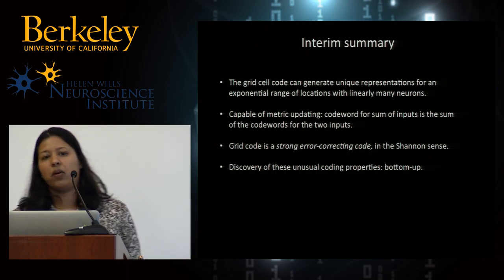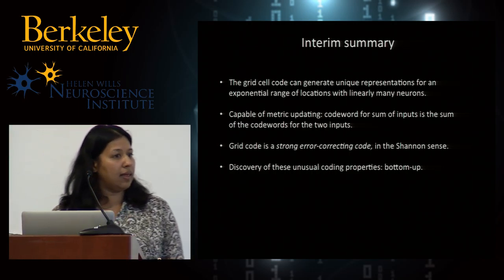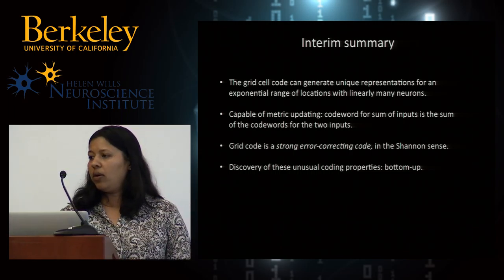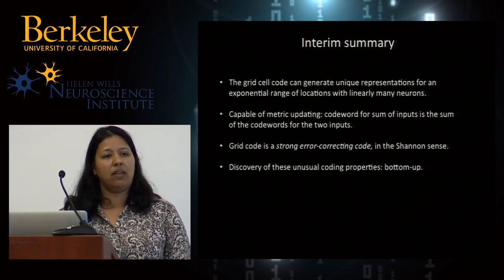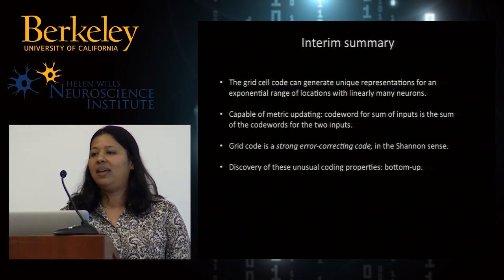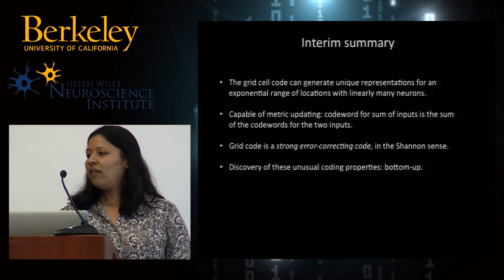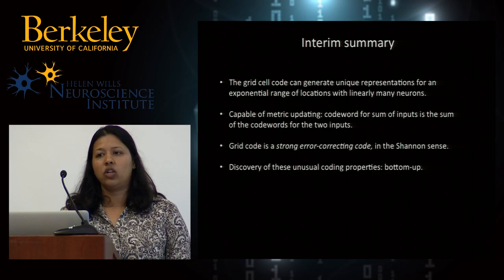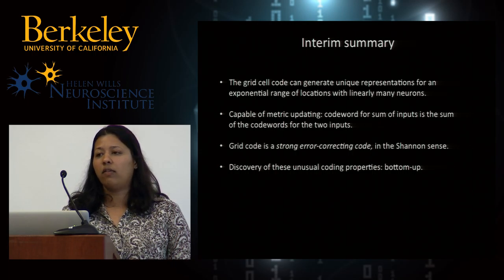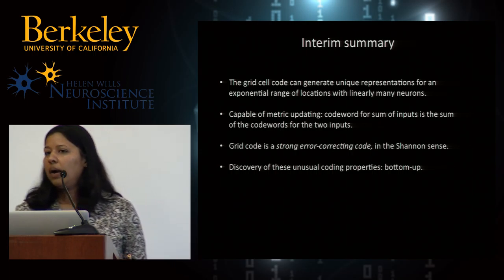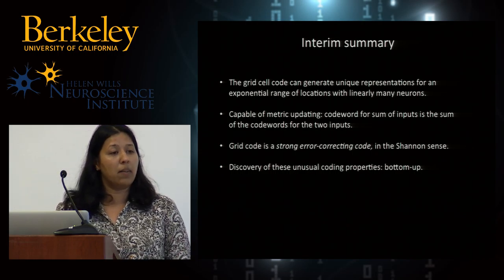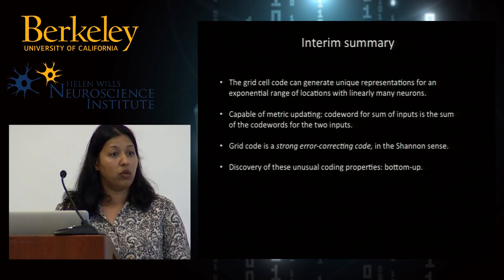As a sociological note, the discovery of these properties of the grid cell code was very much bottom-up. I didn't come in as a coding theorist looking for residue number system codes or strong error correcting codes in neuroscience. It resulted from the discovery of grid cells, trying to understand why this puzzling representation for space has the mathematical properties it does, through a chain of deductive reasoning. Bottom-up approaches still have a lot of promise for neuroscience.